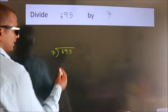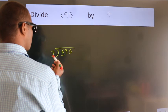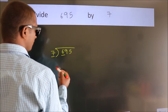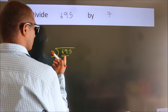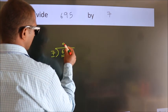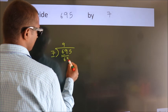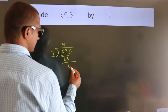Next, here we have 6, here 7. 6 is smaller than 7, so we should take two numbers as 69. A number close to 69 in the 7 table is 7 times 9, which is 63. Now we should subtract. We get 6.